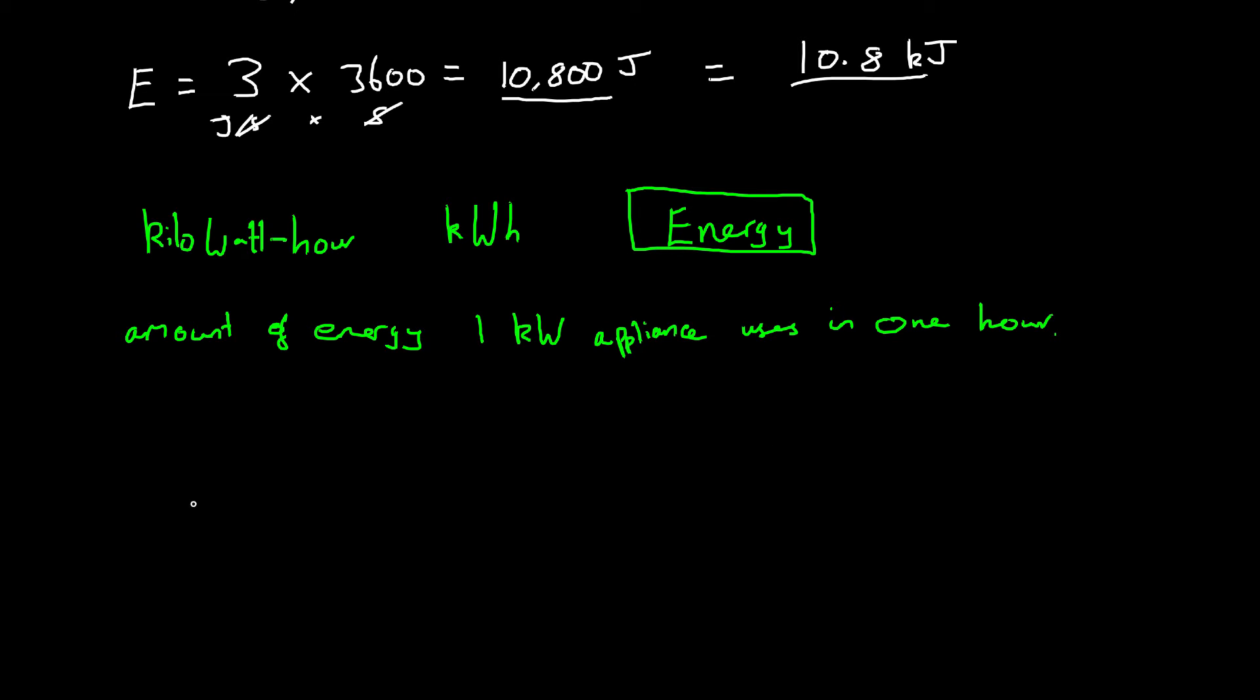Let's actually work that out. If I had an appliance which used one kilowatt, and I was using it for one hour. Remember, one hour is 60 minutes times 60 seconds, which equals 3,600 seconds. So in joules, energy equals power, and this is one kilowatt, which is 1,000 watts. So 1,000 watts multiplied by time, which is 3,600. This gives us a final answer of 3,600,000 joules. That is exactly the same as one kilowatt hour. It is exactly 3,600,000 joules. That is the amount of energy used by one kilowatt appliance in one hour.